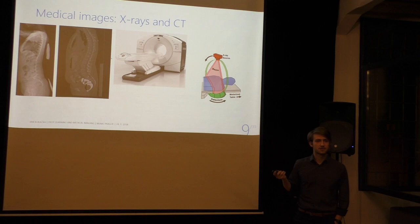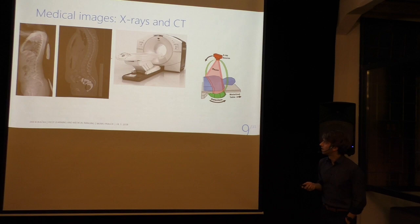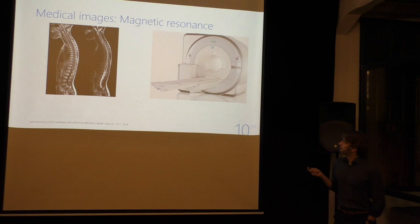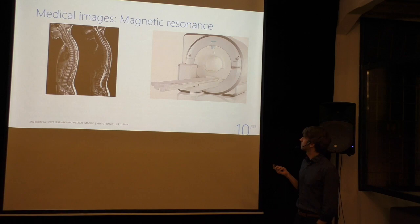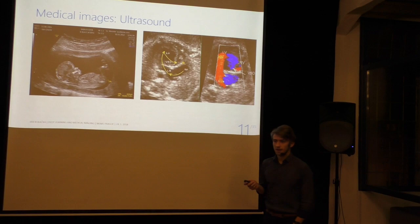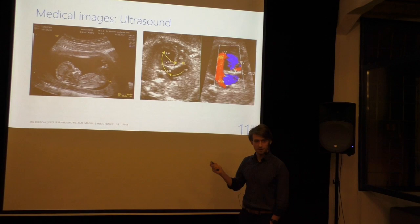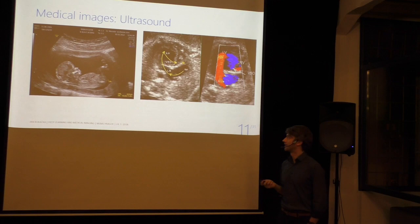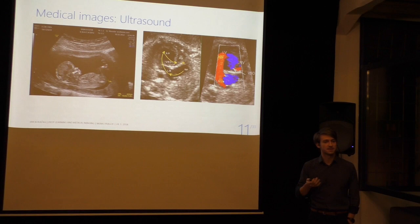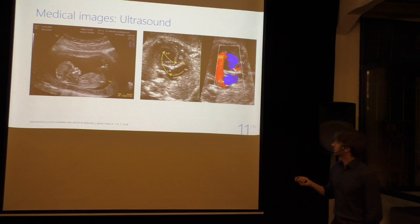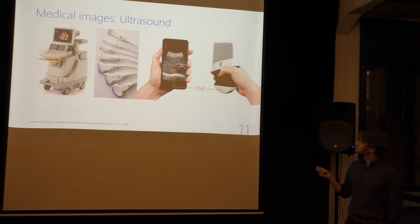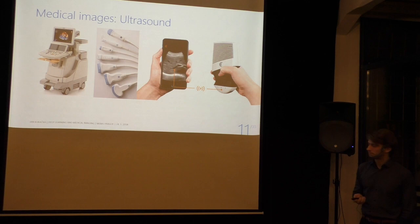CT has the obvious drawback that the patient needs lots of radiation exposure, so it's not always ideal. There are other modalities including magnetic resonance imaging, which looks very similar to CT but doesn't involve dangerous radiation. Another example is ultrasound — every one of you has probably had an image taken like that. But ultrasound is much more powerful: it can do functional imaging, meaning you don't only see how things look inside but also get information about how they work. For example, this is an ultrasound picture of a heart with color-coded blood motion. Ultrasound is very powerful and increasingly portable.